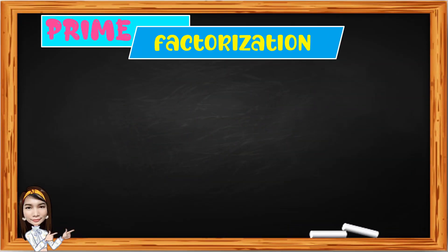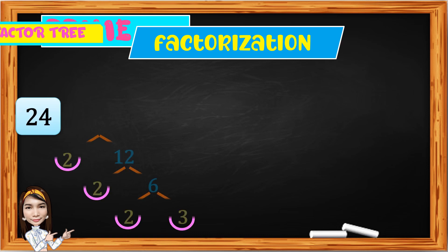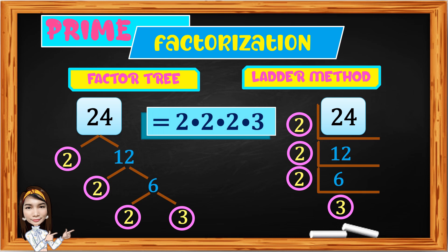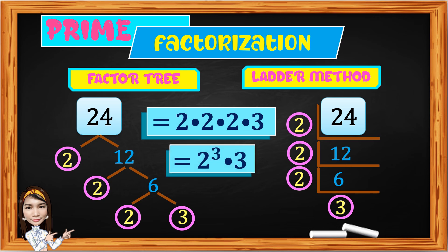In our previous lesson, I already discussed about prime factorization using the factor tree and ladder method. The factor of 24 is 2 times 2 times 2 times 3, and that is written in the exponent form. 2 times 2 times 2 can be written as 2 cubed times 3. 2 cubed is considered as an exponential form.